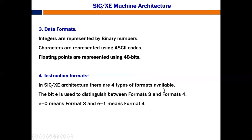We have 4 types of instruction formats available. There is one bit known as E, for extended representation. It is used to distinguish between format 3 and format 4. When E is 0, it is format 3; when E becomes 1, it is format 4.